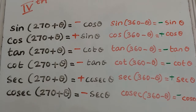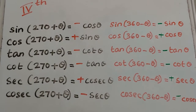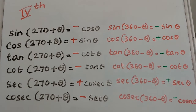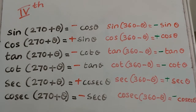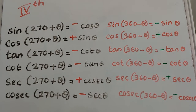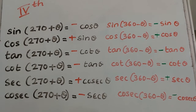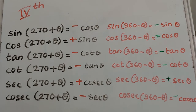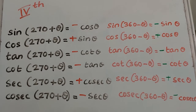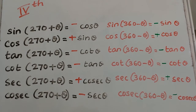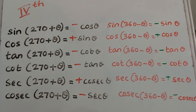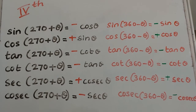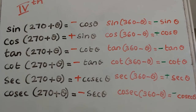You can easily find the trigonometric ratios of any angle. To evaluate the trigonometric ratios of any angle, identify which quadrant it falls in, and remember: All Students Take Coffee. Don't forget — All Students Take Coffee. Bye bye.